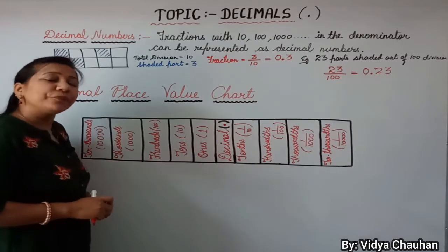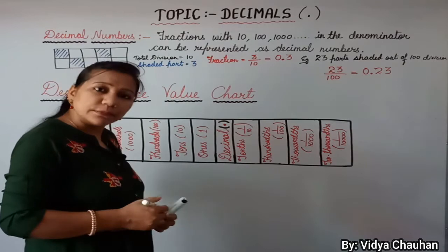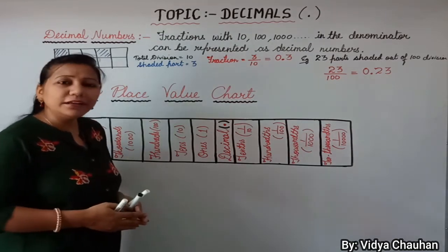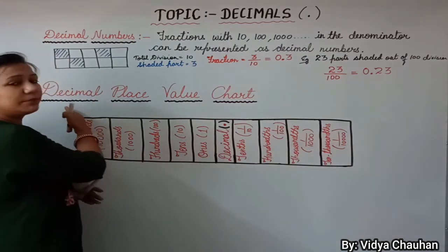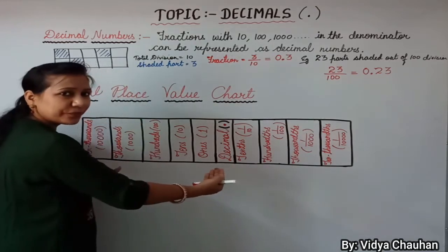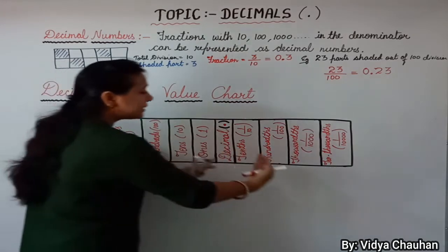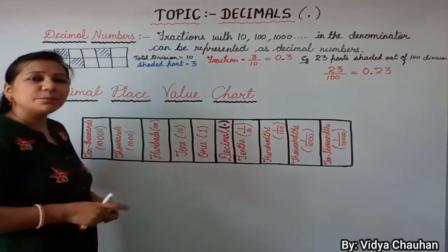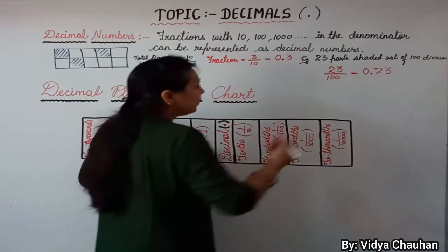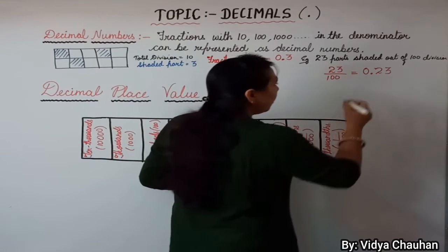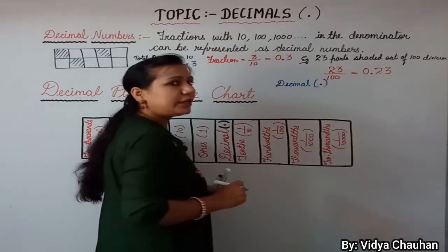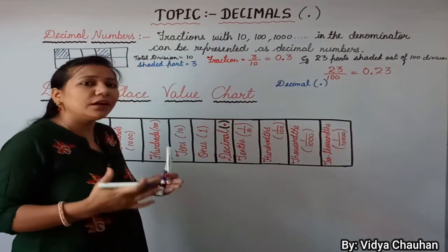Now our second topic is the decimal place value chart. Just like the normal Indian and international place value charts, we have a separate place value chart for decimal numbers. There is some variation — some parts are the same as the Indian or international system, and some parts are different. The decimal point is the sign that actually divides or separates a number into two parts.